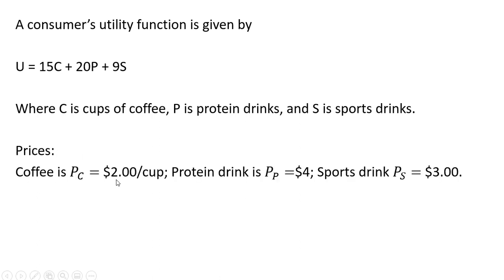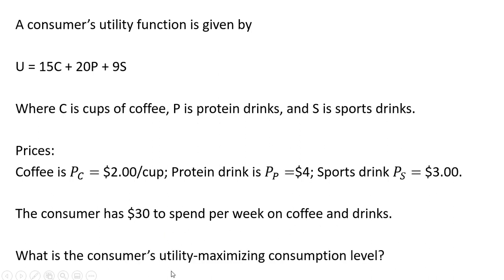For the prices, a cup of coffee is $2, a protein drink is $4, and a sports drink sells for $3. The consumer has $30 to spend per week on coffee and drinks. What is the consumer's utility maximizing consumption level?